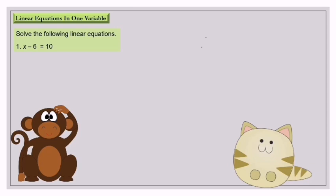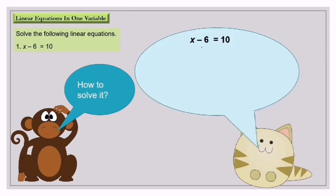Solve the following linear equations. Question number 1: s minus 6 equals 10. How to solve it? The opposite of minus is plus. So when you move this minus to the right hand side, it will become plus. s equals 10 plus 6. s equals 16.